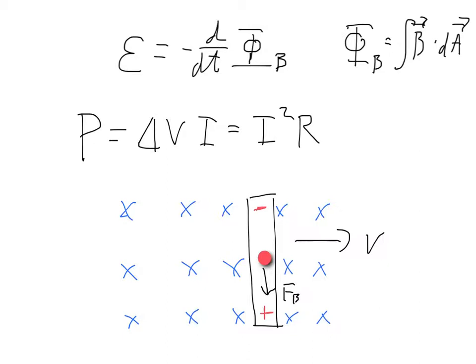So in a sense, when we are moving a rod through the magnetic field, we're creating an electric field.